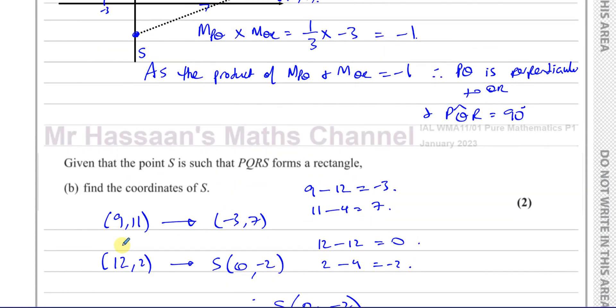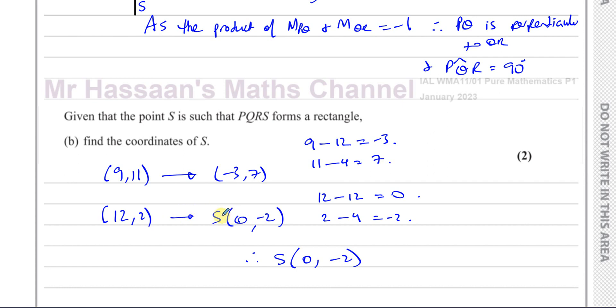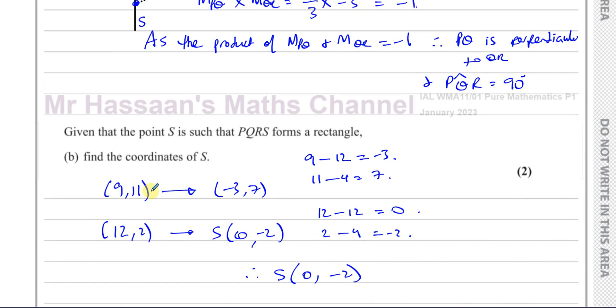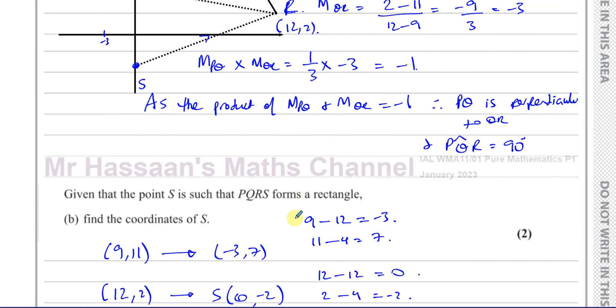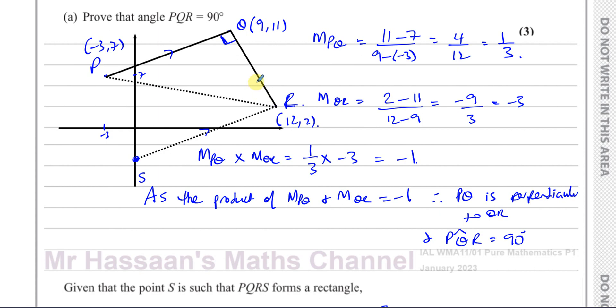We could have used vectors for this, although we haven't really gone through vectors in P1. In fact, we don't do vectors until P4, but the simple vectors we need for this is just stuff we've covered in IGCSE. The vector that takes us from Q to P is the same vector that takes us from R to S because they're parallel and the same length because it's a rectangle. Rectangles have the property that the opposite sides are parallel and the same length. The vector is 9 to minus 3, negative 12, and 11 to 7 which is negative 4. So we took this point and transformed it by this vector, which gave you 0 and minus 2.